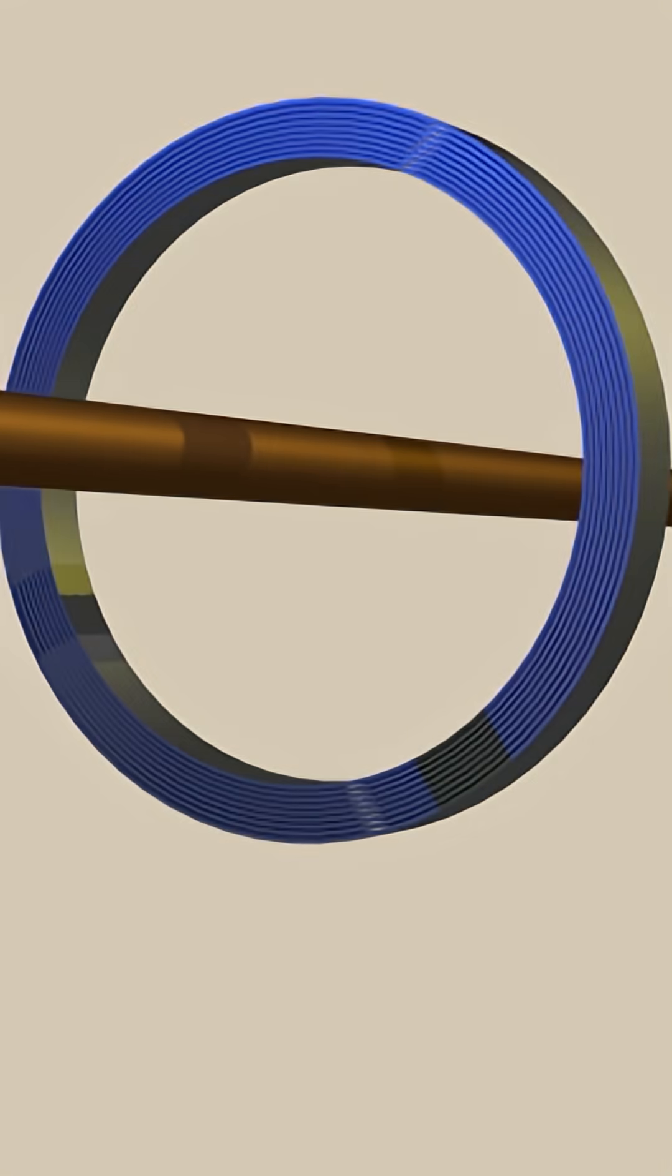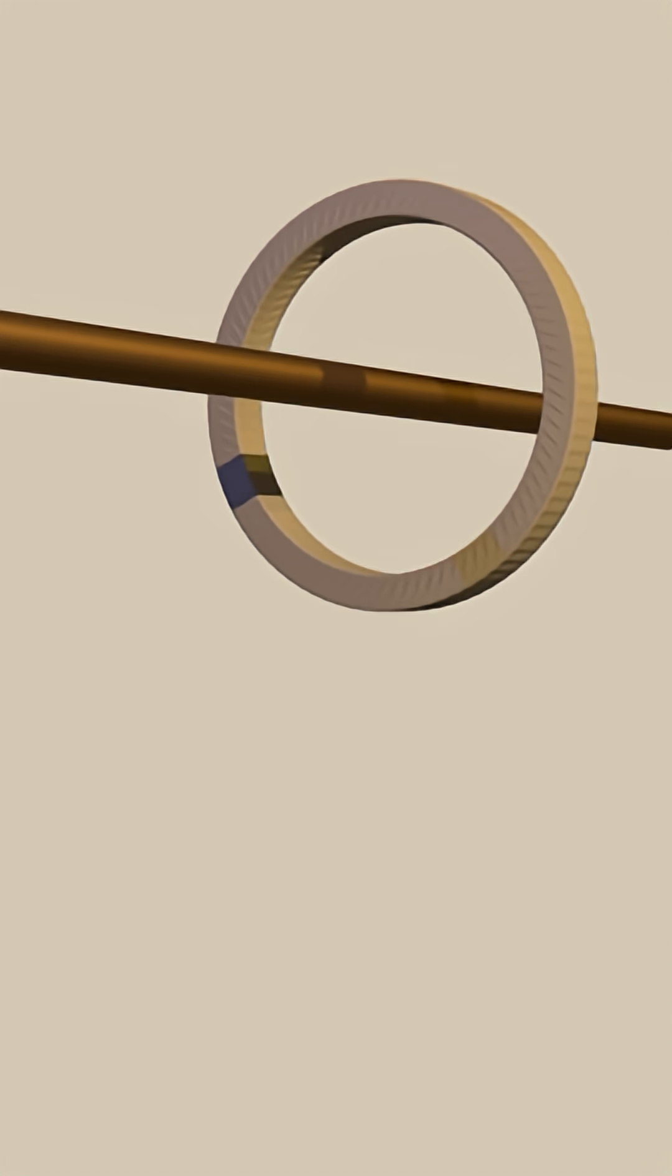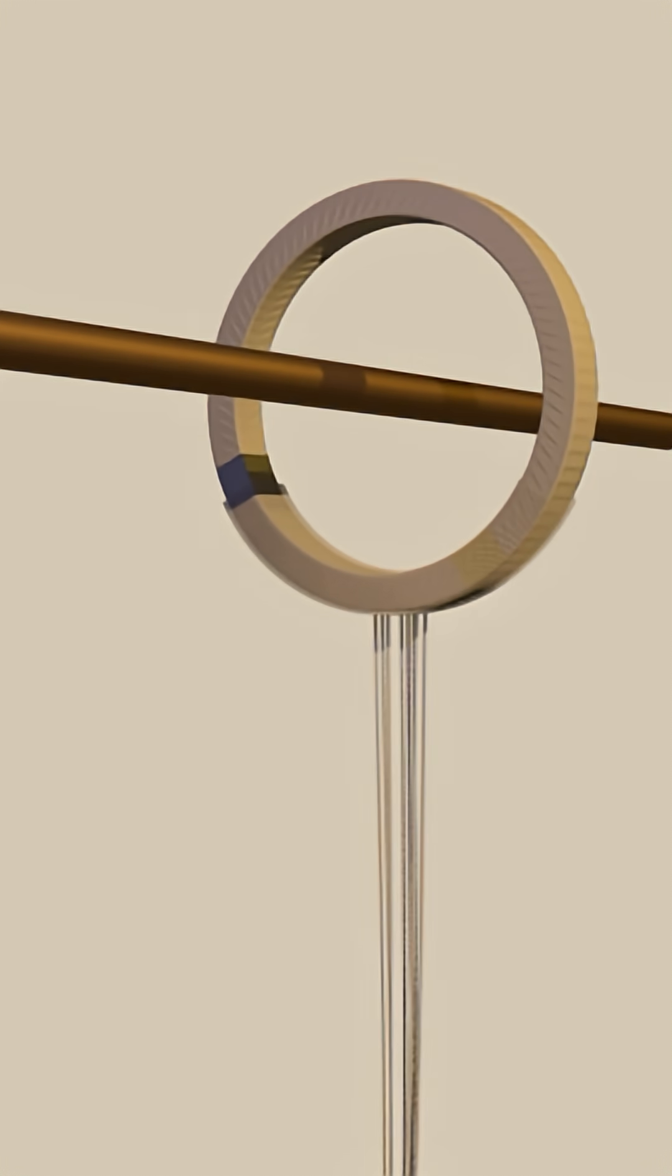This core assembly is then covered with paper insulation as shown. Now the secondary winding is wound over the paper insulated core as shown.